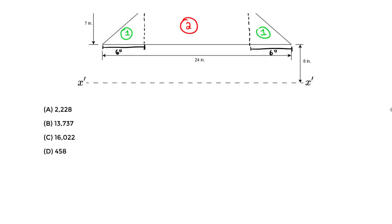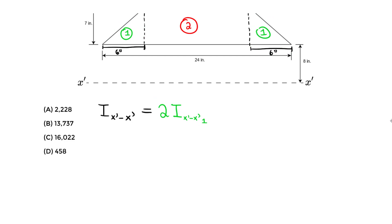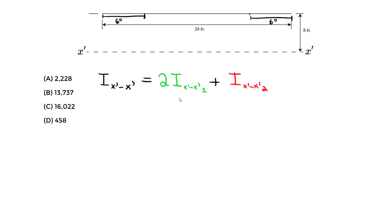Now I'll write the total equation for the moment of inertia for the entire shape about the x prime x prime axis: I_x'x' equals two times I_x'x' for shape one (the triangles — we multiply by two because there are two identical triangles) plus I_x'x' for shape two (the rectangle). Let's first focus on shape one.